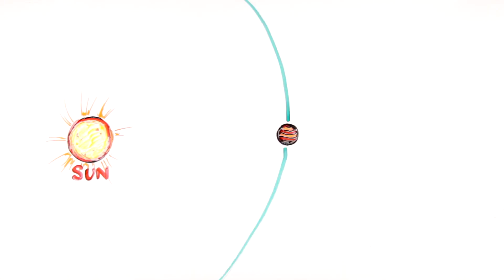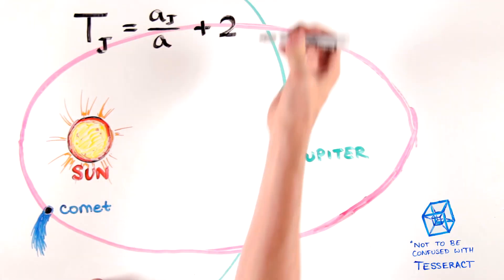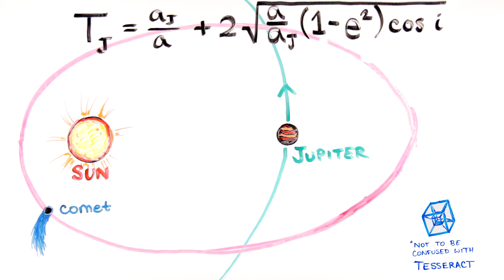But Tisserand's parameter gives a more rigorous way to describe a comet, or a comet versus an asteroid.